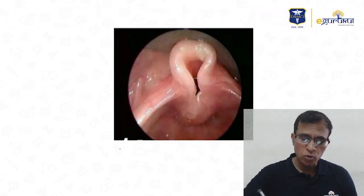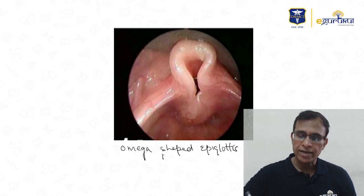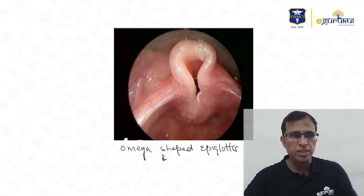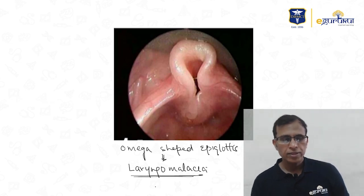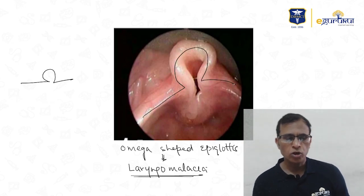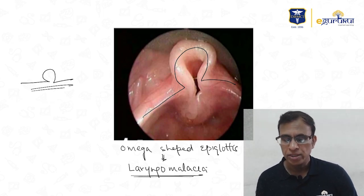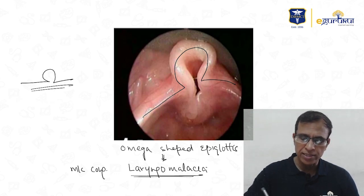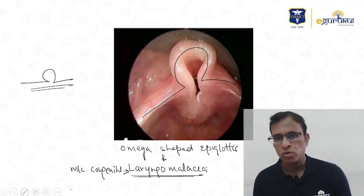This is an omega-shaped epiglottis, and we know that omega-shaped epiglottis is seen in laryngomalacia. Laryngomalacia is the most common congenital disease of the larynx.